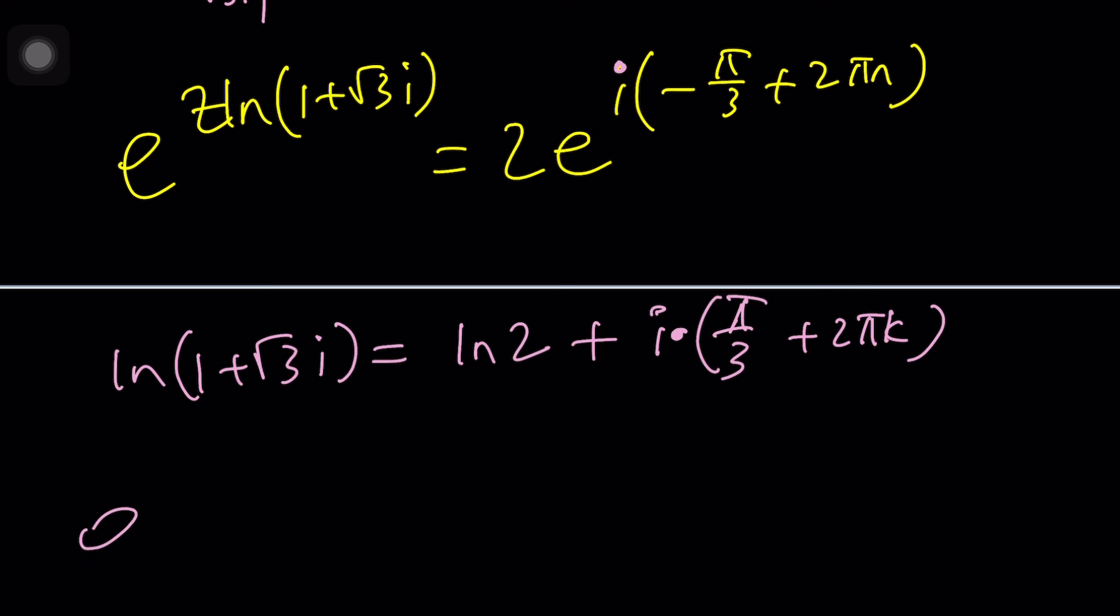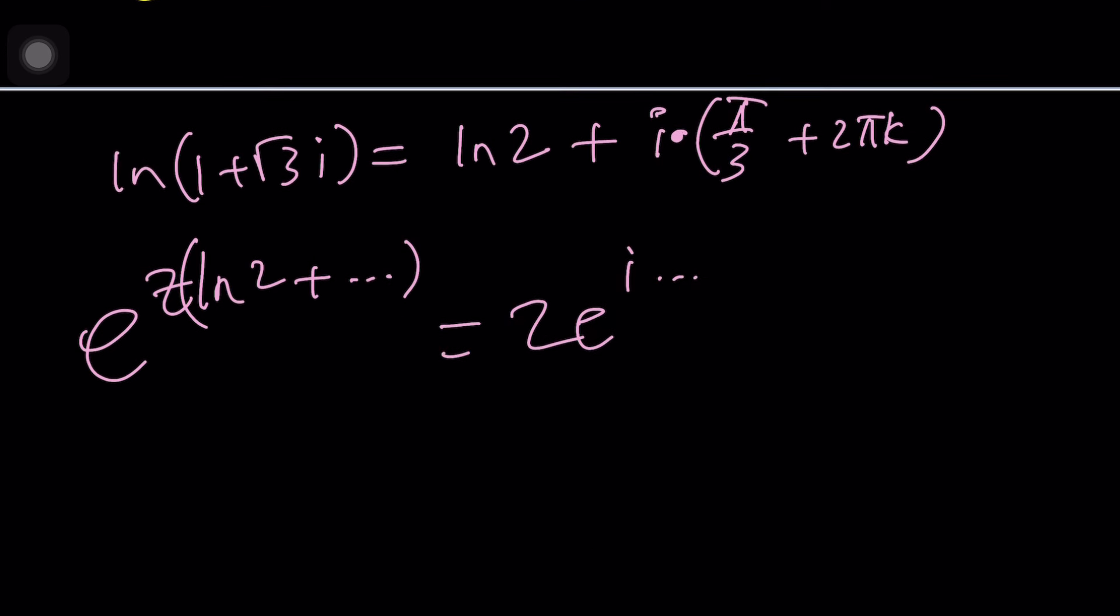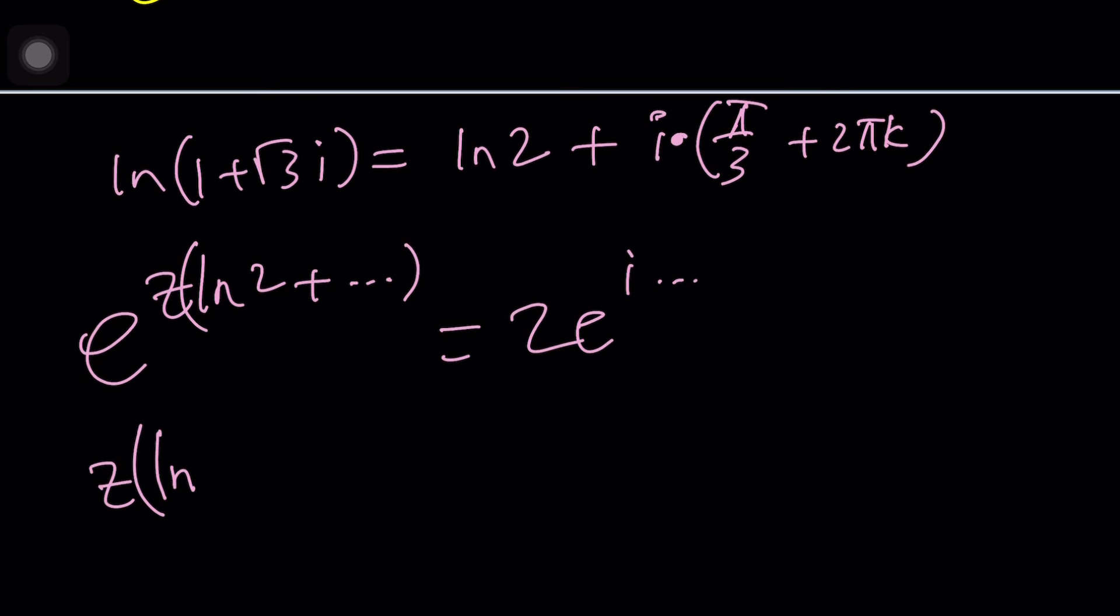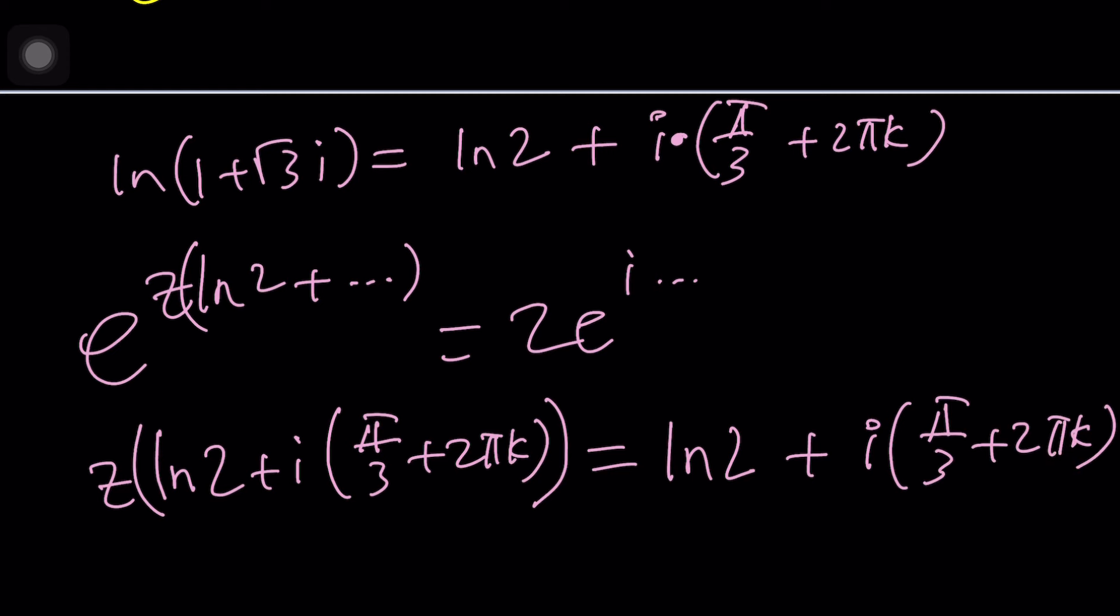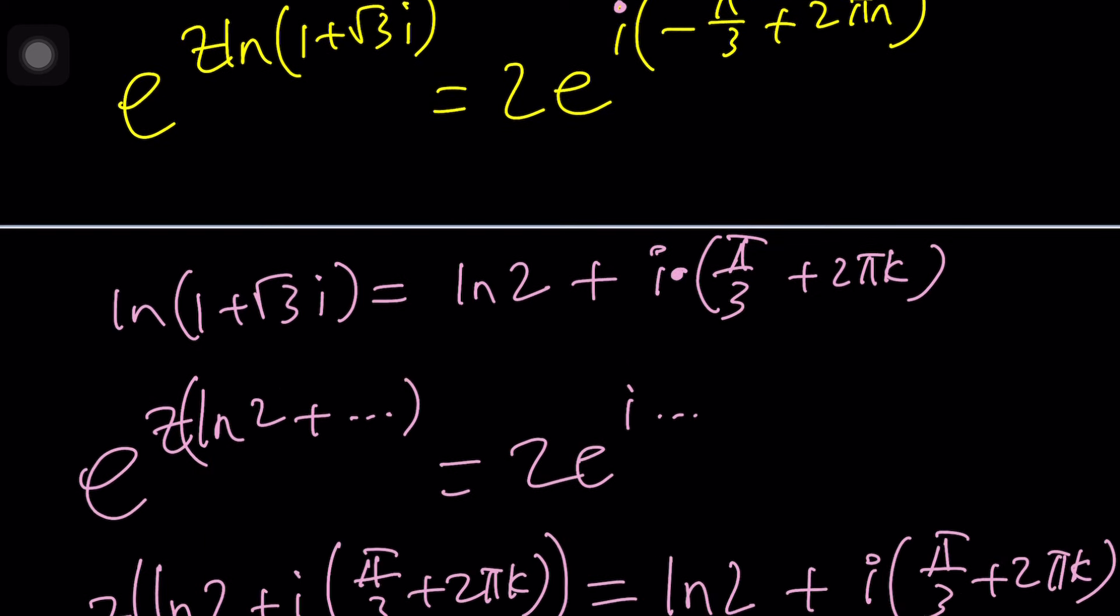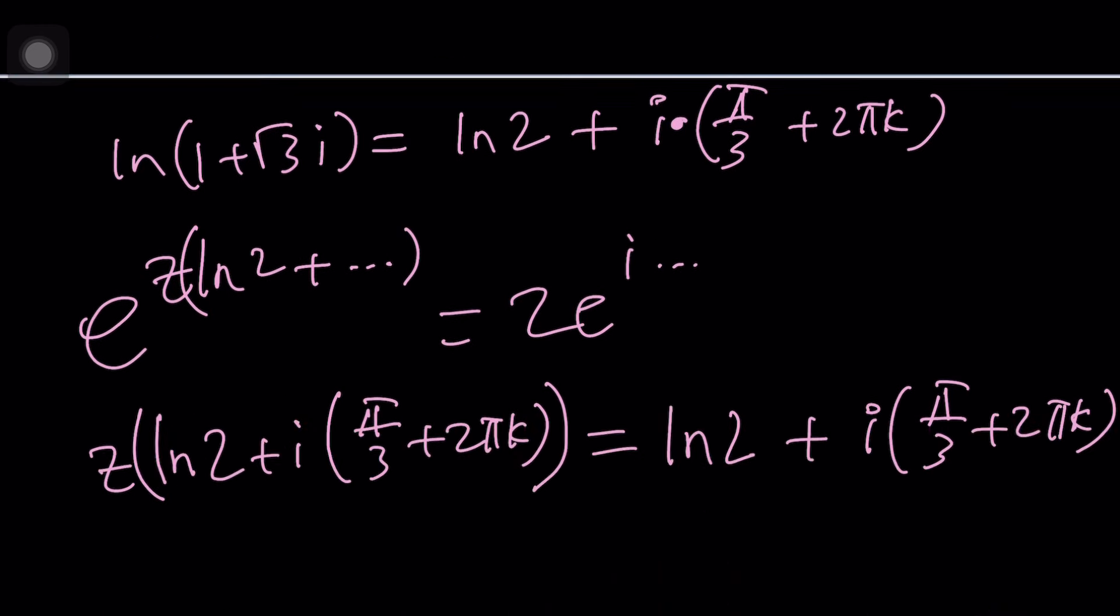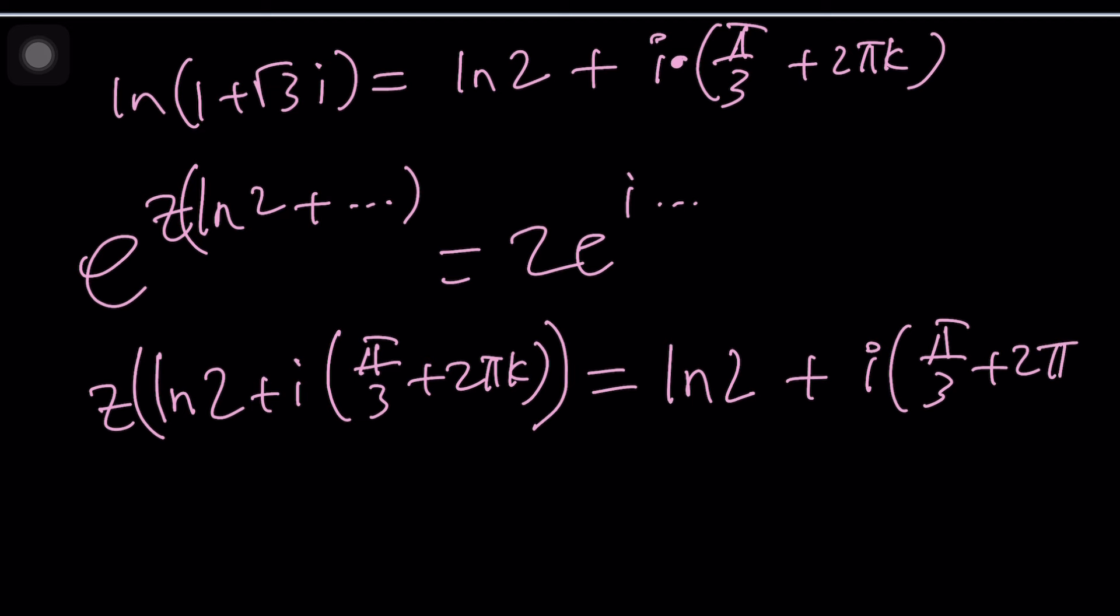Now, from here we get the following. e to the power z times ln 2 plus blah blah blah equals 2 e to the i times blah blah blah. I say blah blah because I'm about to ln both sides, so we don't need to write those things two times. Now, inside the parentheses, we're going to have ln 2 plus i times pi over 3 plus 2 pi k, and then this is multiplied by z. And on the right-hand side, this is after natural logging both sides, it's going to be ln 2 plus i times pi over 3 plus 2 pi k. By the way, this should be an n, I think, on the left-hand side, right? No, the right-hand side has an n. The right-hand side is an n. Yes, the second one should be an n. The first one should be k because we did that first. Okay, that's why.